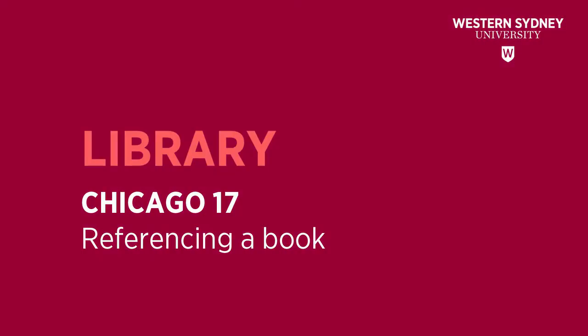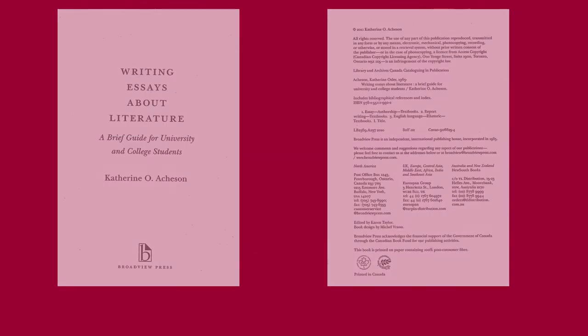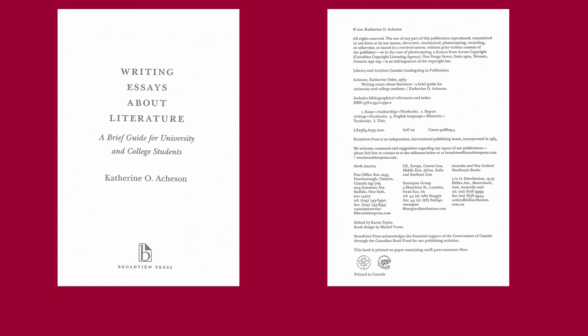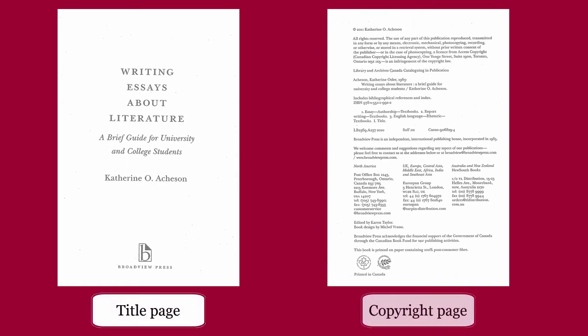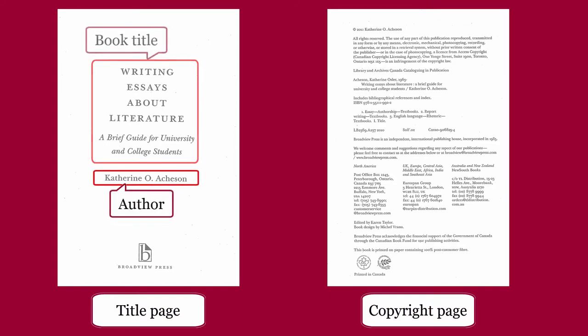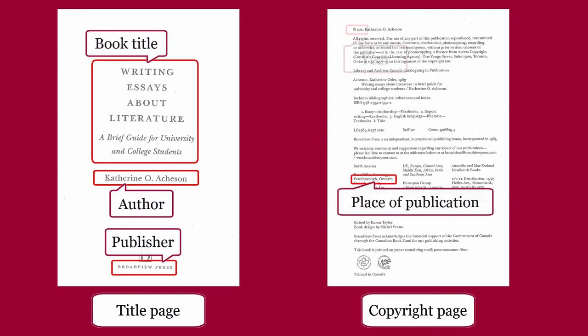This library video will show you how to reference a book using the Chicago 17 style. The details for citing a book are generally found on the title page and the copyright page. Important details include author, book title, publisher, place of publication, and year.